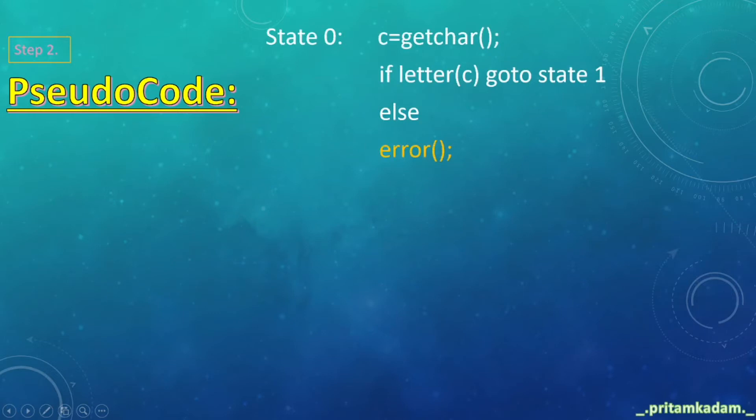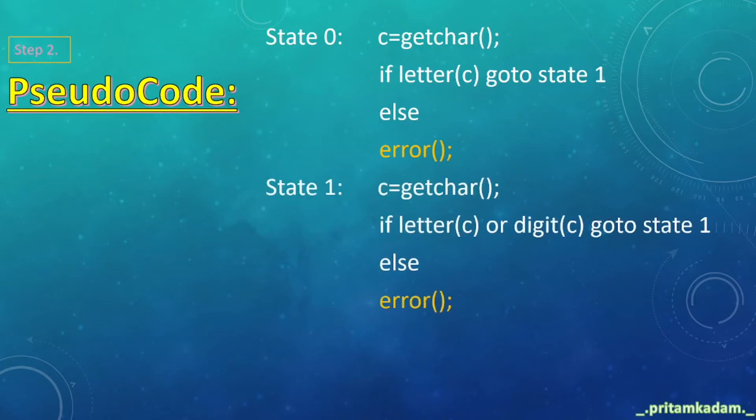Now writing pseudocode. First, state 0: c=getchar(); if letter(c) goto state 1, else error.